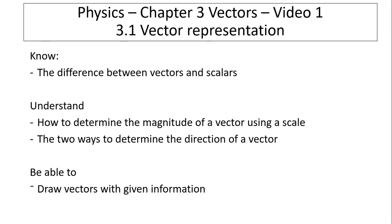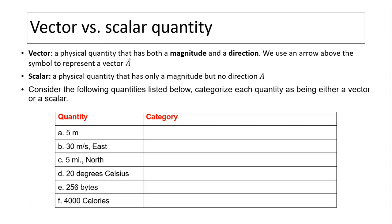Vectors versus scalar quantities: a vector is a physical quantity that has both a magnitude and direction. When we talk about magnitude, we talk about how big it is, or the size of the quantity. We use an arrow above the symbol to represent a vector. A scalar quantity is a physical quantity that has only magnitude — only its size but no direction — so we use a simple capital letter to represent that quantity.